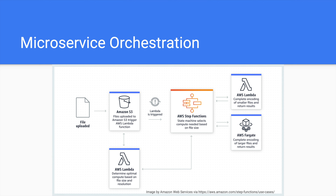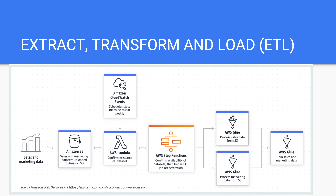For example, in our illustration here, a Lambda function and AWS Fargate have been defined as steps to perform the encoding of a particular image. Images with a larger size and resolution are processed by Fargate, while smaller images are handled by a Lambda function. A choice state is defined in the Step Functions state machine to direct the input files in the right path based on a given variable. Step Functions can also be used to implement complex ETL workflows — in our example, several AWS Glue jobs have been defined as a task to process sales and marketing data. AWS Glue is a serverless data integration service offered by AWS for preparing and combining data to be used for analytics or machine learning.